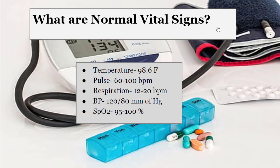The normal respiration rate is 12 to 20 breaths per minute. If it is less than 12, it is bradypnea. If it is more than 20, it is tachypnea. The normal blood pressure is 120/80 mmHg.